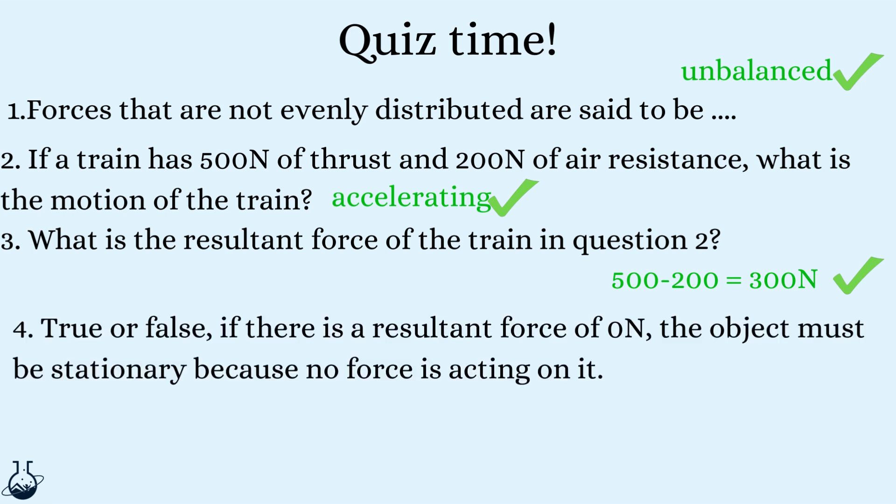Question four. True or false? If there is a resultant force of zero newtons, the object must be stationary because no forces are acting on it. This is false. It could be going at a constant speed. Also, other forces will be acting such as weight and friction.